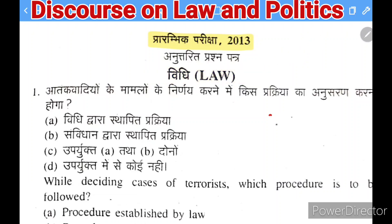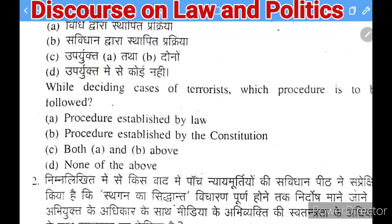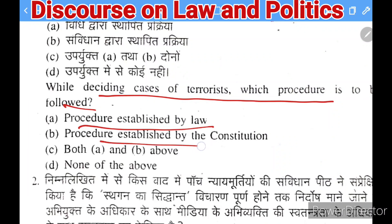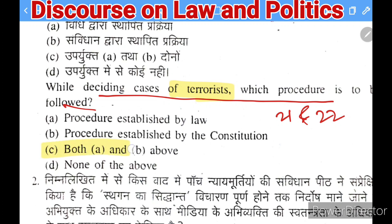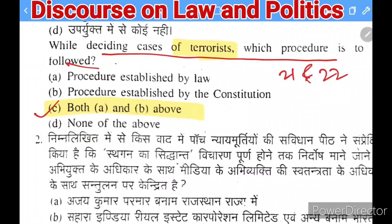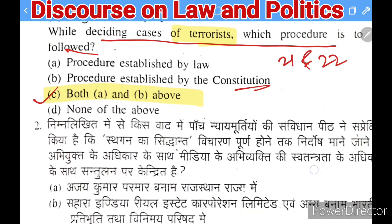The first question from the 2013 paper: while deciding cases of terrorists, which procedure is to be followed? The options are: (A) procedure established by law, (B) procedure established by the constitution, (C) both A and B, (D) none of the above. The right answer is C — both A and B — because Article 21 and Article 22 of the Constitution are both applicable in terrorism cases.